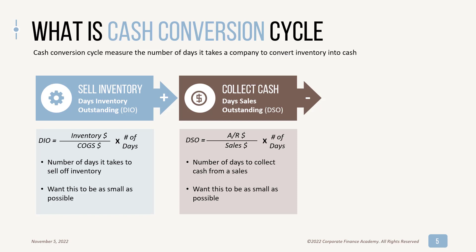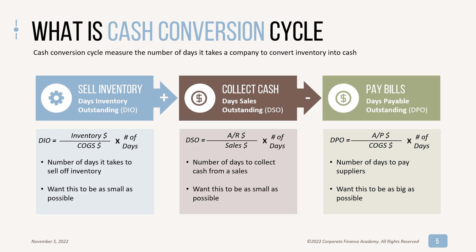Then you're going to subtract out your DPO, or days payable outstanding. This is how long it takes you to pay your bills. The formula is accounts payable divided by COGS times days. And you want this to be as big as possible — because you want it to take a long time to pay your suppliers. The longer you're not paying them, the longer you have the cash in your hand.